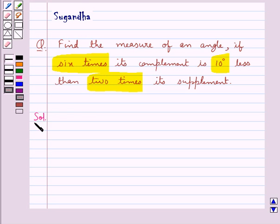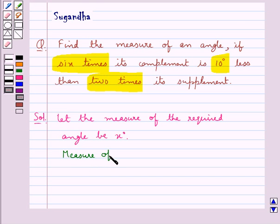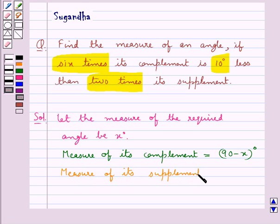Let's move on to the solution now. We need to find the measure of an angle. So let the measure of the required angle be x degrees. Then the measure of its complement would be equal to 90 minus x degrees. And the measure of its supplement is equal to 180 minus x degrees.